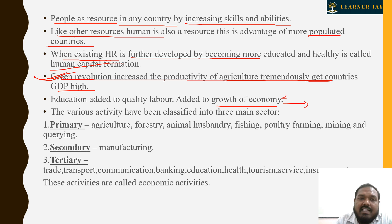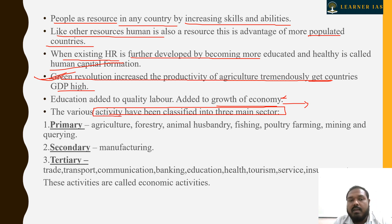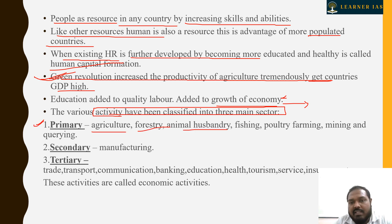Education added to quality level adds to the growth of income. अगर हम किसी भी level में education और skill को add कर दें तो उसकी income बढ़ जाएगी, और economy में growth होगा। The various activities have been classified into three major sectors — this is important. Primary sector में आता है: agriculture, forestry, animal husbandry, fishing, poultry, farming, mining and quarrying, etc.